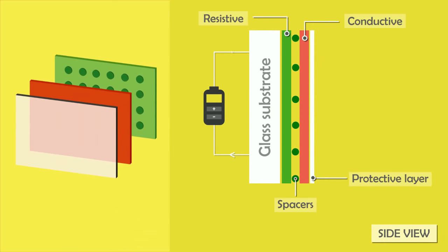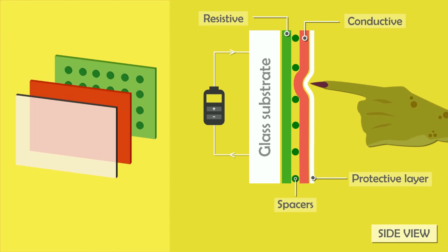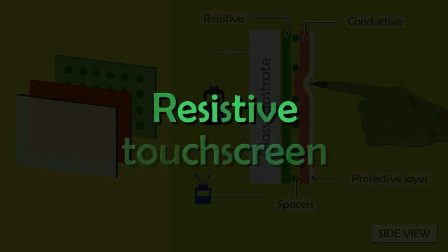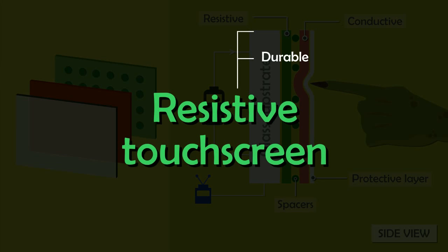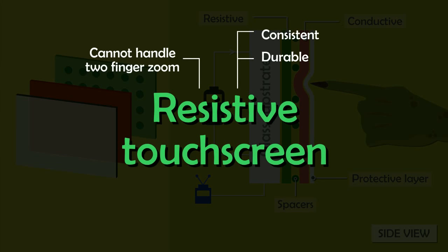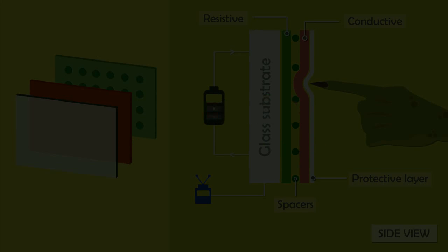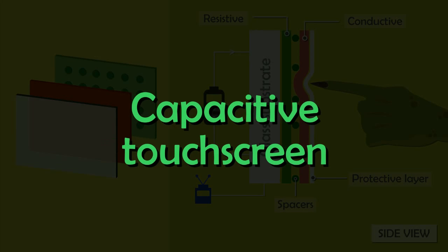An electrical current runs through the two layers at all times. When you touch the screen, the two layers are pressed together and the electrical current changes at the point of contact. The change in electrical field and its coordinates are calculated by the software, which carries out the function corresponding to that spot. Although this system is durable and consistent, it can only handle one touch at a time. That is why high-end devices most likely use capacitive touchscreens.